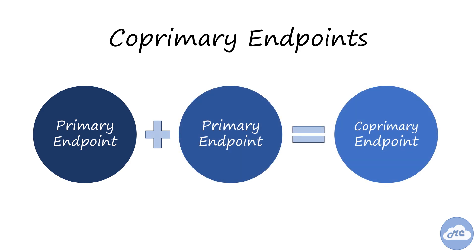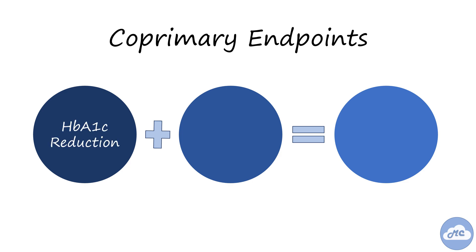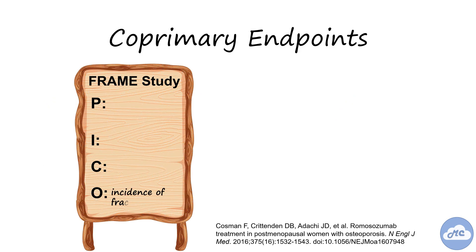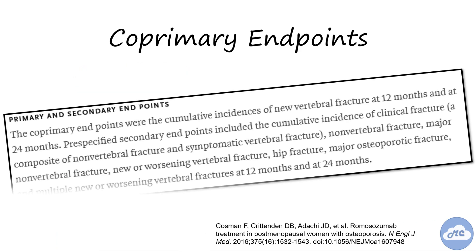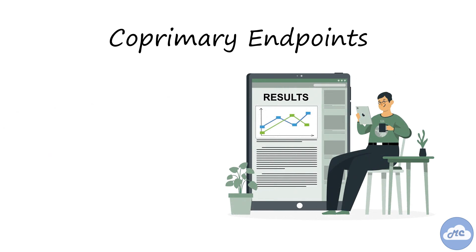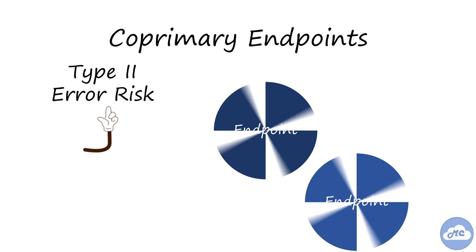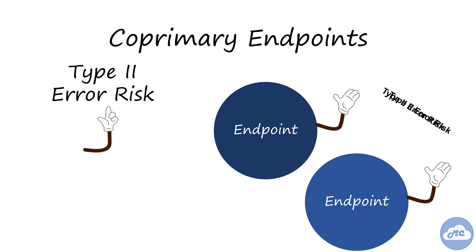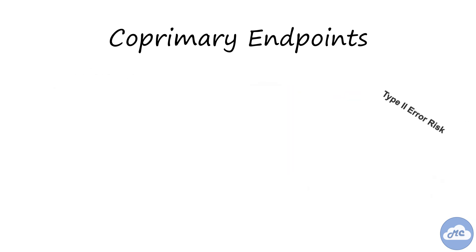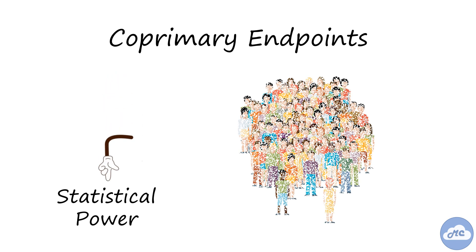A study with co-primary endpoints uses two or more primary endpoints of equal importance. The aim of the study is to show an effect for both endpoints. Co-primary endpoints are useful if demonstration of two or more outcomes is necessary to establish clinical benefit. For example, the FRAME study investigated the incidence of fracture with romosozumab compared to placebo in post-menopausal women with osteoporosis, using the co-primary endpoints of new vertebral fractures at 12 months and 24 months to establish efficacy. Results of studies with co-primary endpoints can be more difficult to interpret, as there is an increased risk of type 2 error because each endpoint carries a probability of type 2 error, and these are combined when there are multiple endpoints. This increased risk of type 2 error can lower statistical power and requires a larger sample size to overcome.